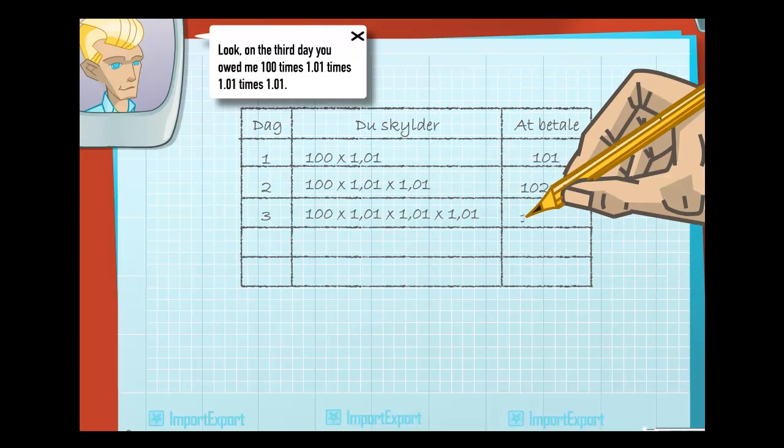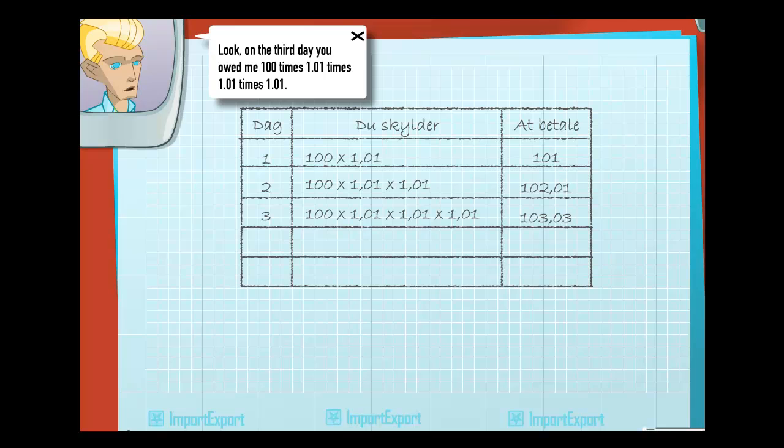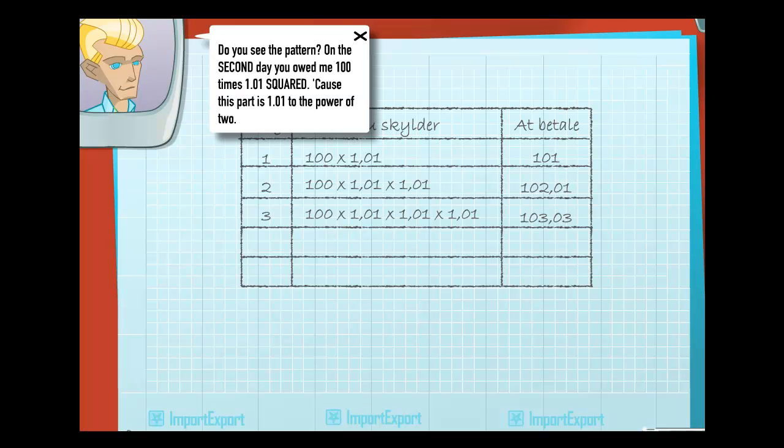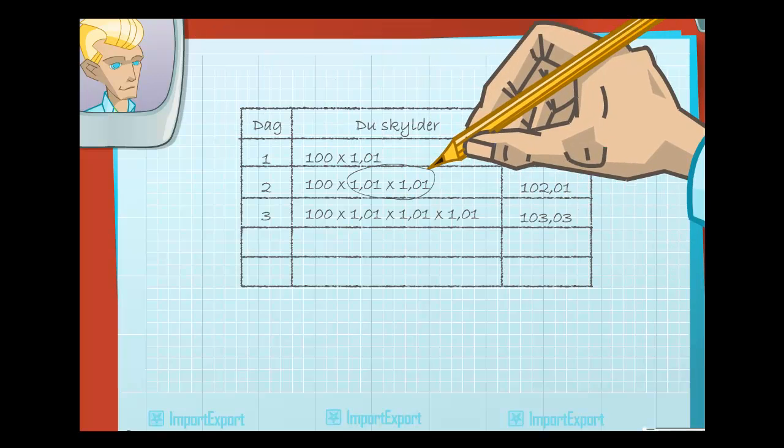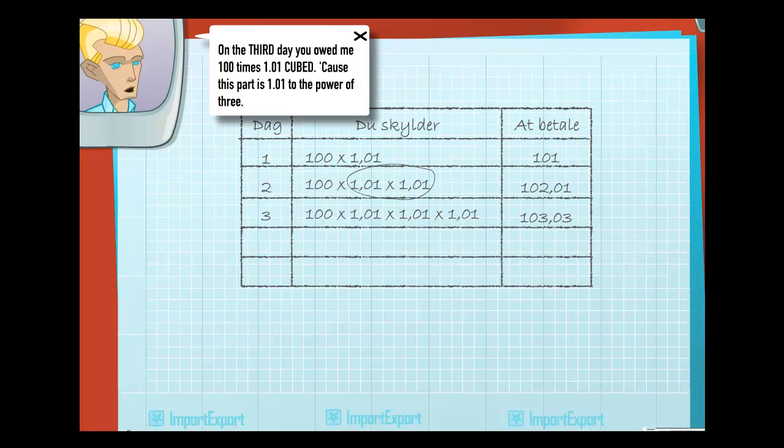Look. On the third day, you owed me 100 times 1.01 times 1.01 times 1.01. Do you see the pattern? On the second day, you owed me 100 times 1.01 squared, because this part is 1.01 to the power of 2. On the third day, you owed me 100 times 1.01 cubed, because this part is 1.01 to the power of 3.